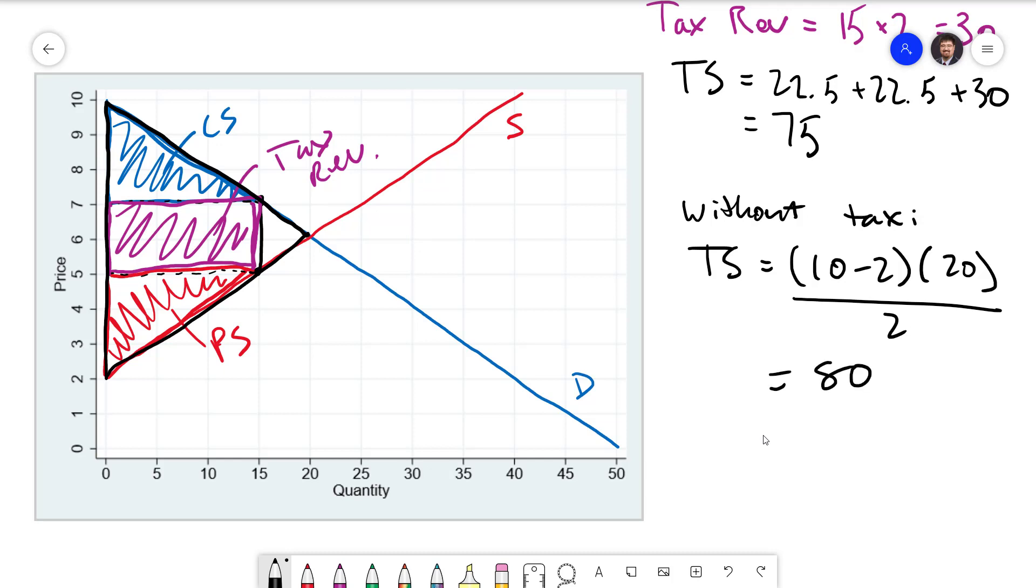What this means is that we have lost 5 total surplus from putting the tax in. The reason for this is the tax distorts incentives so that 5 fewer units are being transacted and those are 5 units where normally the willingness to pay exceeds the cost and so they are worth doing. The tax prevents that.